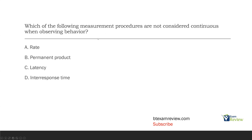Question seven. Which of the following measurement procedures are not considered continuous when observing behavior? Be careful — this is a little tricky. We're looking for the one that is not continuous and does not require observing behavior. Option A: rate. Is it continuous? Yes. Do we observe behavior? Yes. Rate is a continuous measurement used when observing behavior.